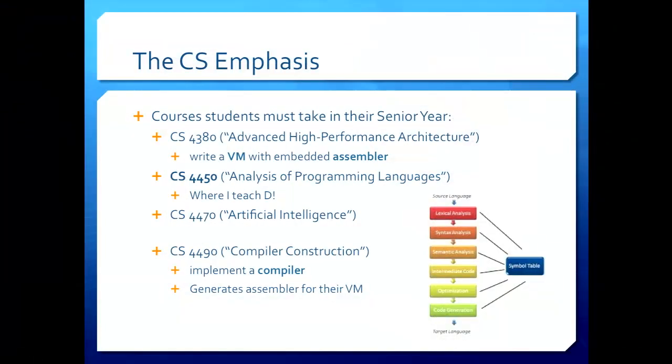In their senior year, our students in the CS emphasis in the fall have to take the first three classes you see here. An advanced high-performance architecture class where they write their own virtual machine with an embedded assembler. And then they take my class where I teach D, among other things, the analysis of programming languages. And those two classes are the prerequisite for the compiler construction class that they have in the spring, where they actually implement a compiler. And it's a sizable language, functions, classes, objects, and the virtual machine is multi-threaded. And then, of course, they have to take artificial intelligence, too. So the fall semester of their senior year is really quite difficult.